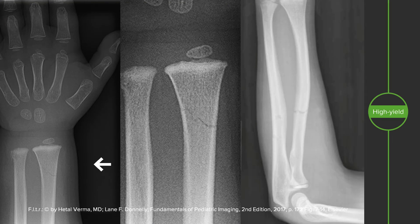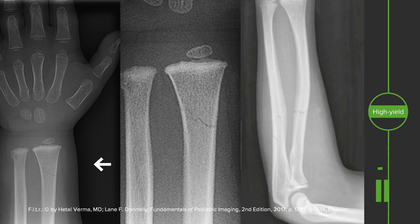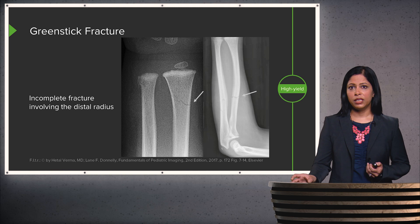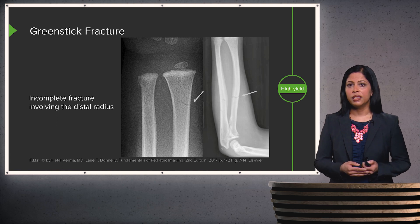Here we have two images of the wrist and a single image of the forearm. On this coned-down image of the distal radius, we can see a very subtle fracture line that involves a portion of the cortex — it comes partway through, but the other portion of the cortex is not really involved. We see a similar fracture of the radius on the other view. This is an example of a greenstick or incomplete fracture of the distal radius, involving only one side of the cortex, very commonly seen in immature bones.